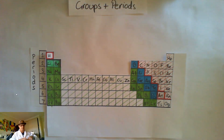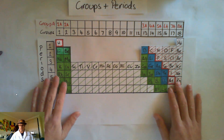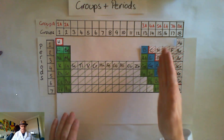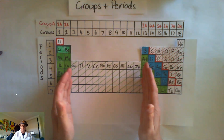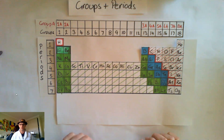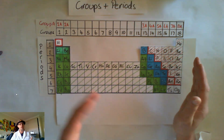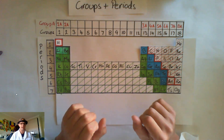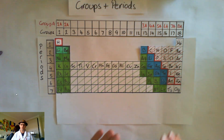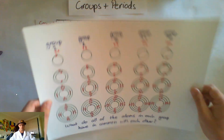Let's go to our groups. I've got my groups labeled here — 18 groups, one to 18. Between groups 3 and 12 are our transition metals, which we're not looking at in year nine science. We're looking at the first two groups and the last six groups. We're going to list those as group A: group 1A, 2A, and 3A through to 8A. So what do all elements in each group have in common?